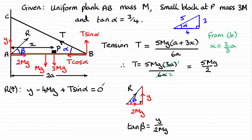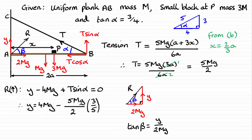So if we substitute that value for T in here, and remember sin alpha is opposite over hypotenuse, so that ratio is going to be 3 fifths. Doing that substitution gives us this result. I can see that I can do some more cancelling — that 5 cancels with that 5. So what we end up with is that Y will be equal to 4mg minus 3mg over 2. Well, this is the equivalent of 8mg over 2, take away 3mg over 2, which leaves me with Y = 5mg over 2.